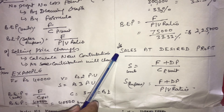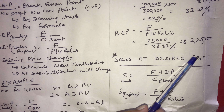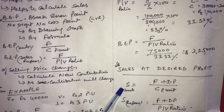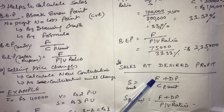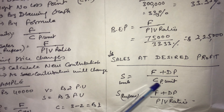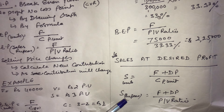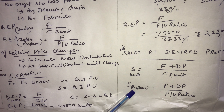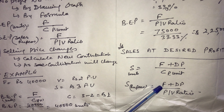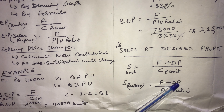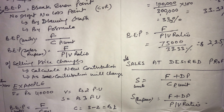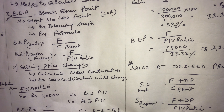The fourth important term is sales at a desired profit. If we are to calculate sales in units, the formula is: fixed cost plus desired profit divided by contribution per unit. If we are to calculate sales in rupees volume, the formula is: fixed cost plus desired profit divided by PV ratio.